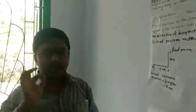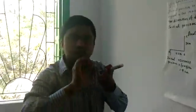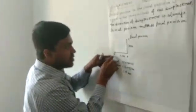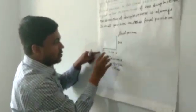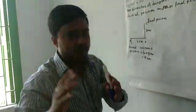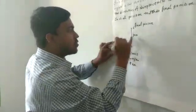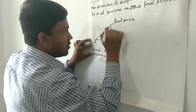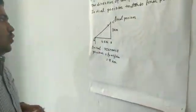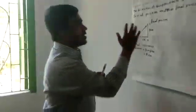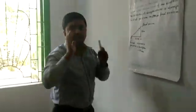Now, what is the value of displacement? Displacement means the shortest path between the initial position to the final position. So A is our initial position and C is our final position. A to B and B to C is not the shortest path. The shortest path is from initial point to the final point — that is AC. So AC is equal to the value of displacement.